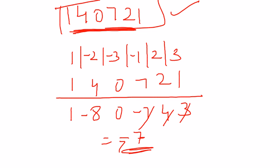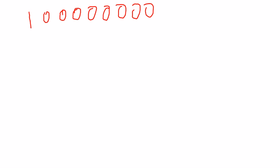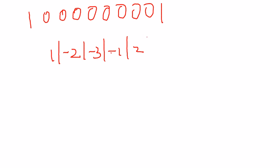Let's see one more example with a large number. We'll take 100000000001. We have to check if this number is divisible by 7 or not. Again, we write down the pattern: 1, -2, -3, -1, 2, 3.